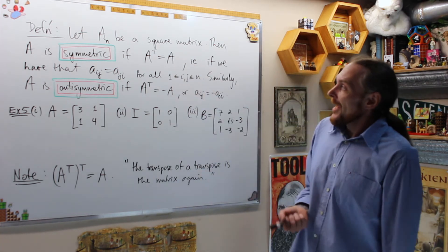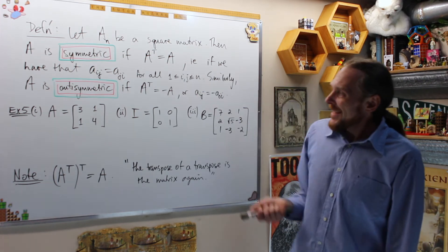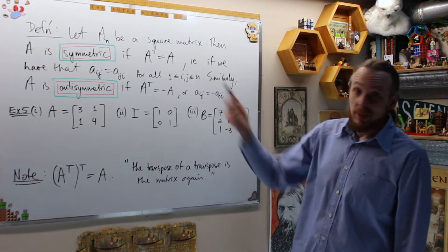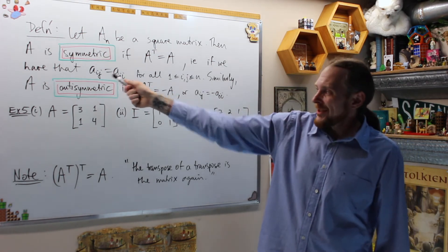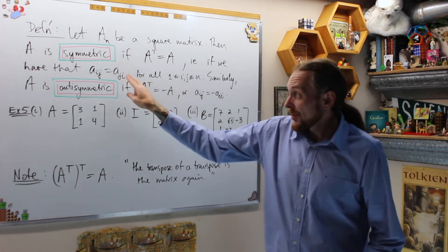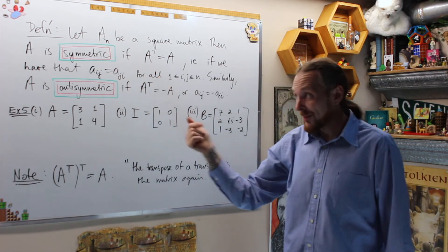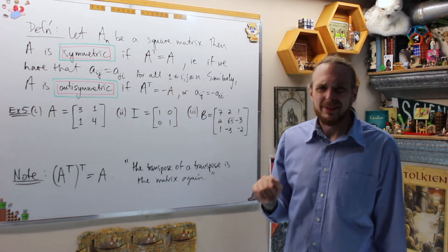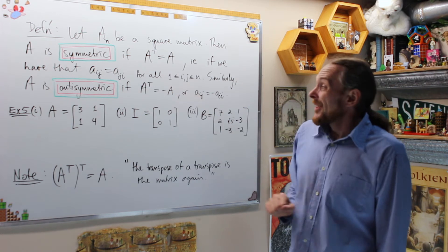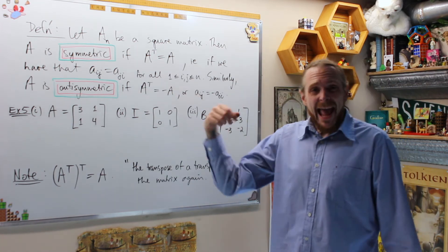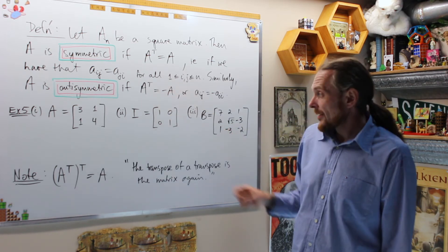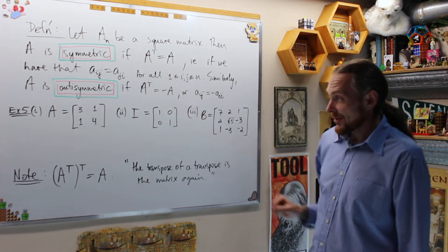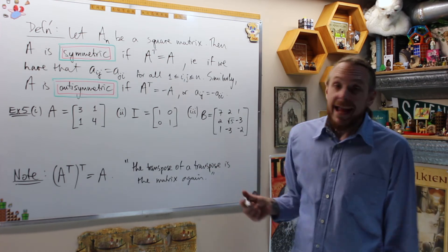Definition. Let A be a square matrix. Then A is symmetric if the transpose of A is equal to A, i.e. if all of our indices we have AIJ equals AJI. When we permute the indices, we keep the numbers the same. We'll do an example in a second. And then similarly, we call A antisymmetric if A transpose is negative A. I didn't do one which is antisymmetric, but you'll see some symmetric ones in a second.